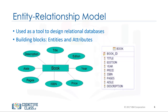Entities can be a noun — person, place, or thing. Using a simplified library as an example, a book is an example of an entity. Attributes are certain properties or characteristics of an entity, and tell us more about the entity. The entity book has attributes such as the book title, the edition of the book, the year the book was written, etc. Attributes are connected to exactly one entity. The entity book becomes a table in the database, and the attributes become the columns in a table.